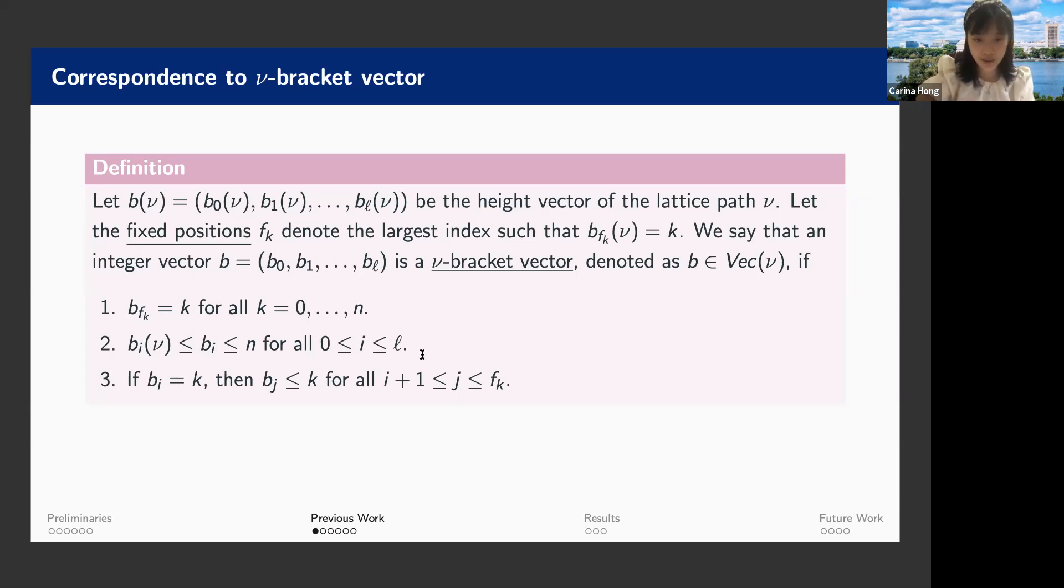The third condition is less straightforward than the previous two. An equivalent, completely equivalent condition would be that there is no one-to-one pattern in this nu bracket vector. So we cannot find indices i smaller than j smaller than k, such that b_i is b_k, but they are both smaller, strictly smaller than b_j. This is not possible. So one-to-one pattern avoiding. And this is basically what condition three is telling us. And also an important or convenient thing to keep in mind is that between any two fixed positions, the sequence is weakly decreasing.